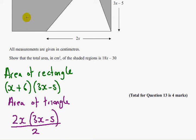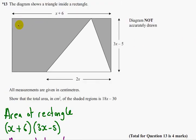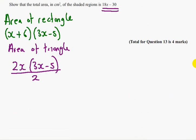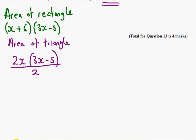So the area of the shaded region is going to be the area of the rectangle, take away the area of the triangle. We need to show that the shaded area is 18x minus 30. So let's get started. We've got x plus 6 times by 3x minus 5, take away this area of the triangle.